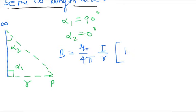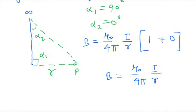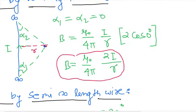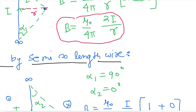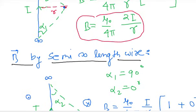Cos 0 is 1, plus cos 90 is 0, so the final formula will be: magnetic field B is equal to mu naught upon 4 pi times I upon R. Obviously, this is magnitude. There will be current, and you can find what the magnetic field will be — that will be inside or outside depending on the direction of the current. These are the two common cases: magnetic field by infinite length wire or semi-infinite length wire.